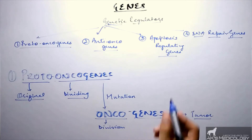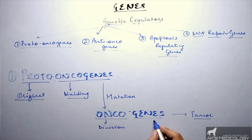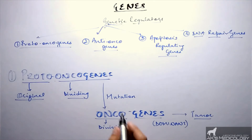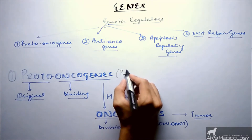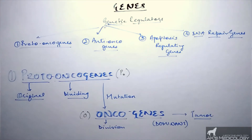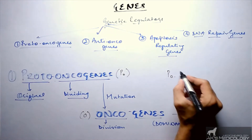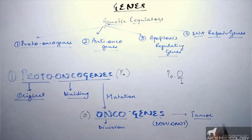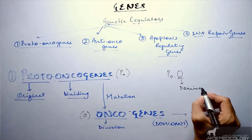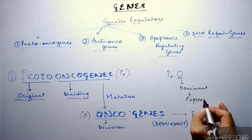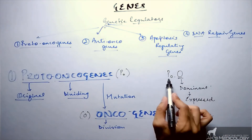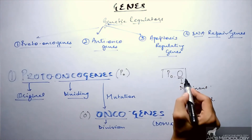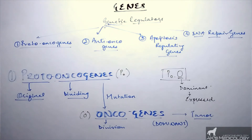Talking about the genetics of oncogenes: oncogenes are dominant over proto-oncogenes. If proto-oncogenes are represented as P-O and oncogenes as O, then in an allele with a combination of P-O and O, the oncogene O would be expressed because, according to Mendelian genetics, the dominant one is expressed. So in a P-O and O combination, the phenotype would be cancer, because oncogenes are always dominant over proto-oncogenes.